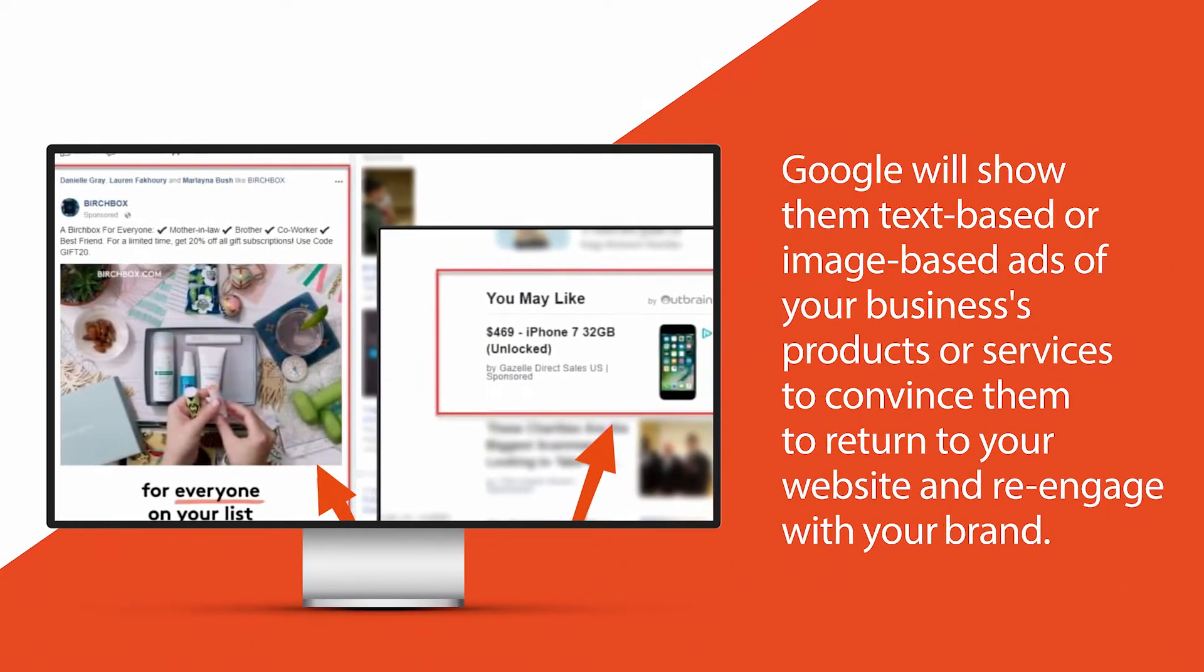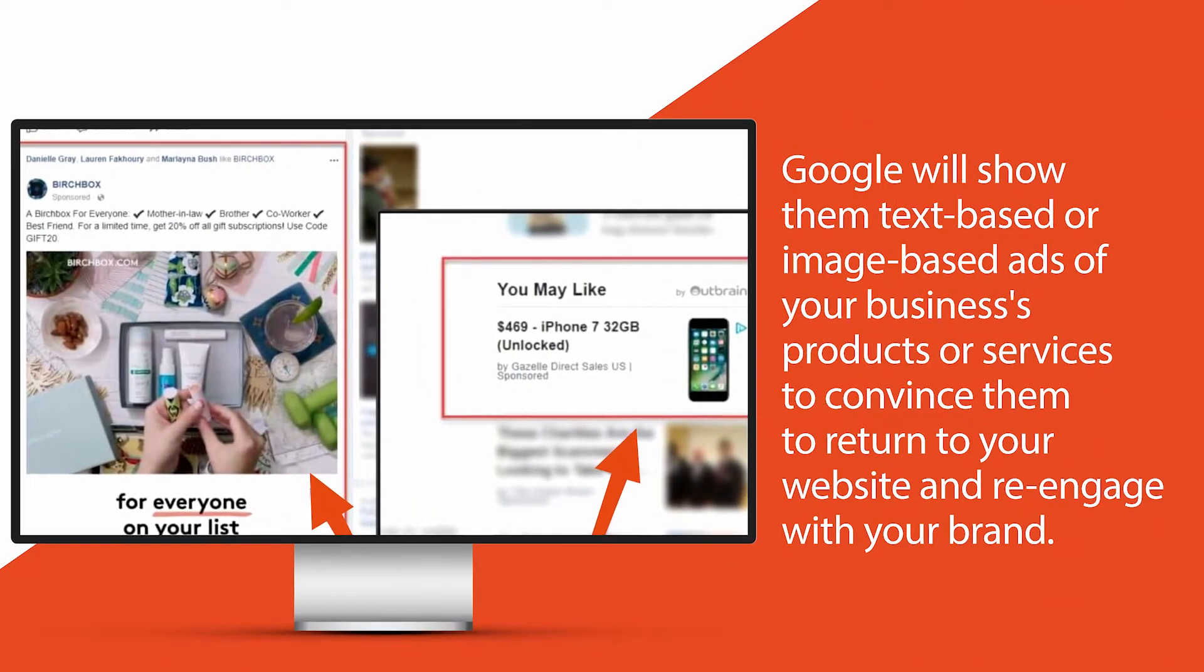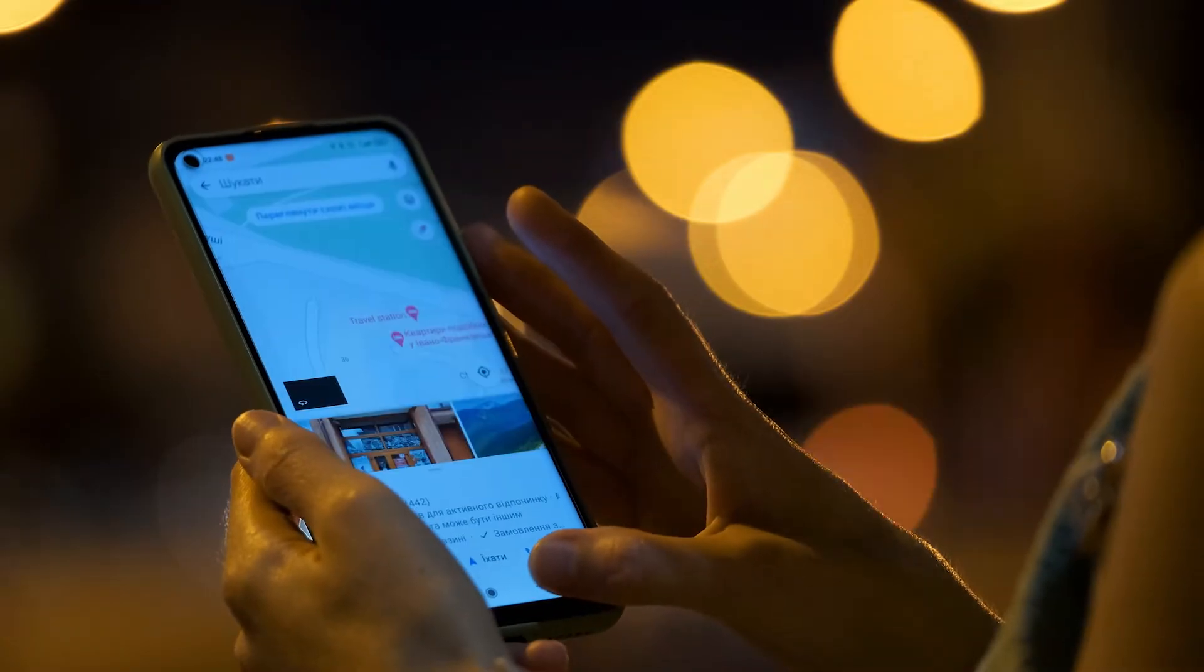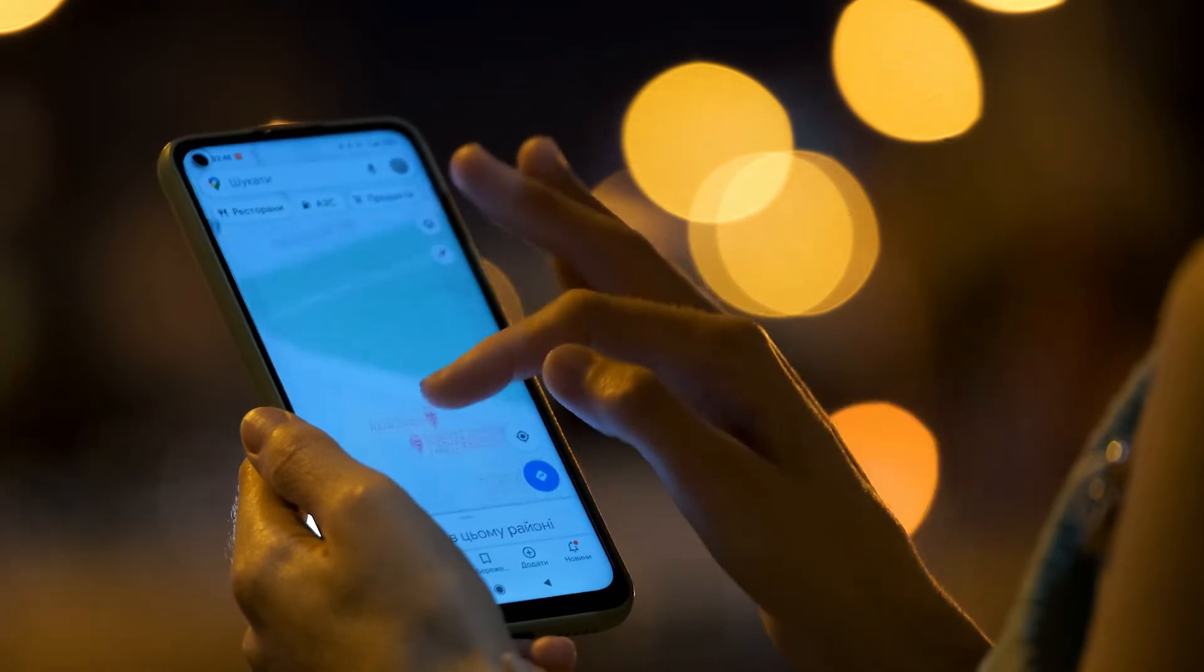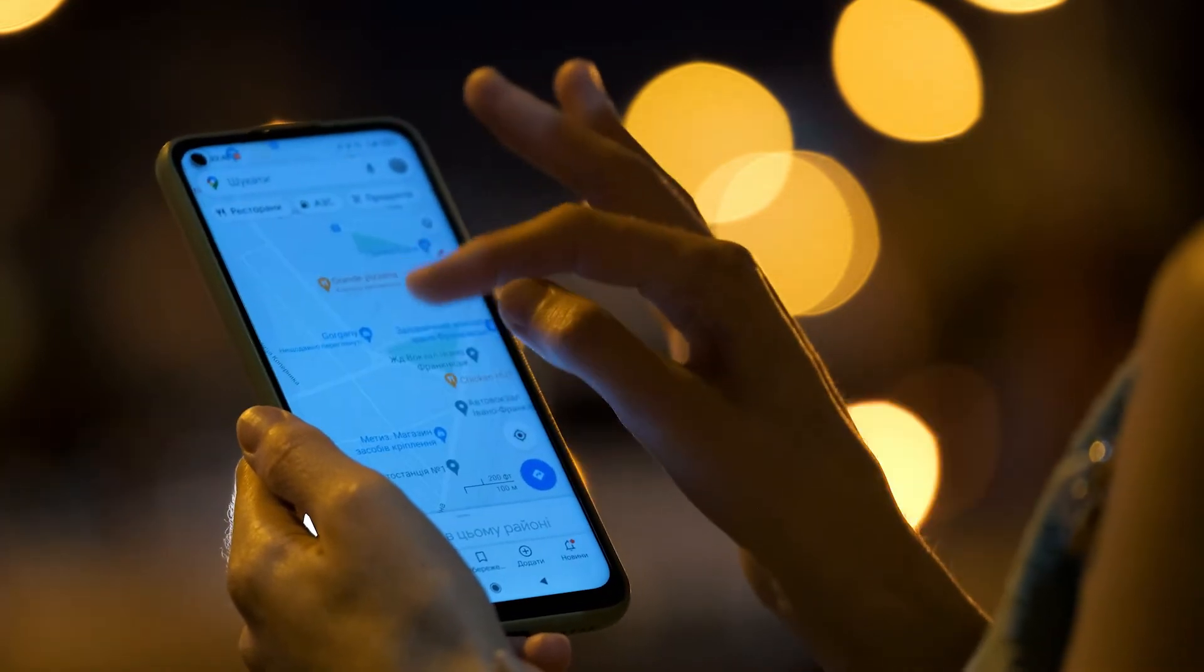With remarketing ads, as the user goes to different websites on the internet, Google will show them text-based or image-based ads of your business's products or services to convince them to return to your website and re-engage with your brand. The cost per click for remarketing users is usually just a fraction of the original cost to bring that user to your website. And as they've already shown interest in your product or service, these users are more likely to convert.